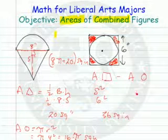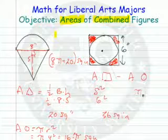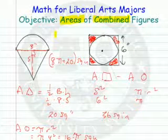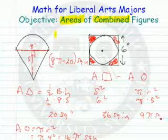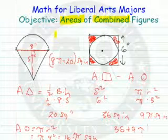The area of the circle is equal to pi r squared. Pi times 3 squared, or 9 pi square inches. Put it together. Your answer is 36 minus 9 pi square inches.